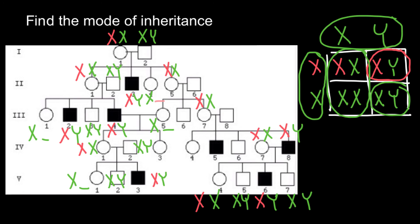We can also put genotypes for all the outcrossers and the remaining people. This outcross male has normal X and normal Y; this affected male has defective X and normal Y; another outcross male has normal X and Y. The female here has one normal X chromosome from her father's side, and the second chromosome can be either normal or carry the defective gene, so we write normal X and a blank space. It looks like we have assigned genotypes to every person in this pedigree.